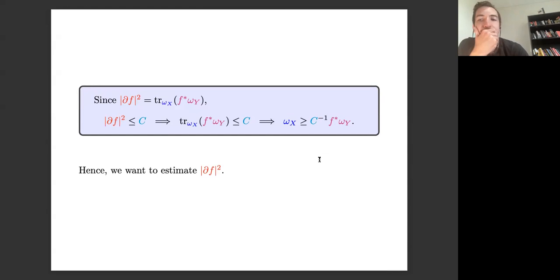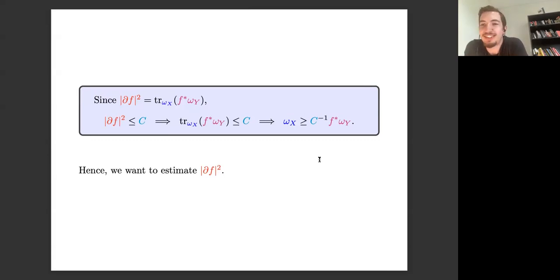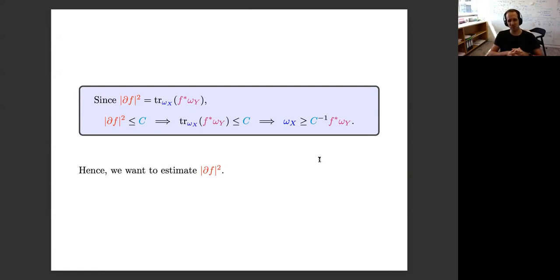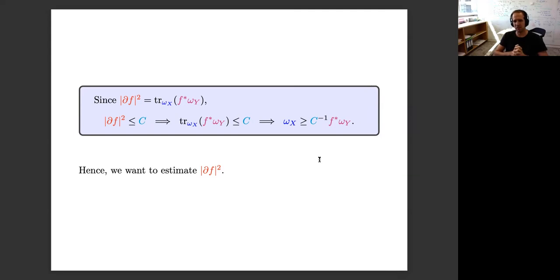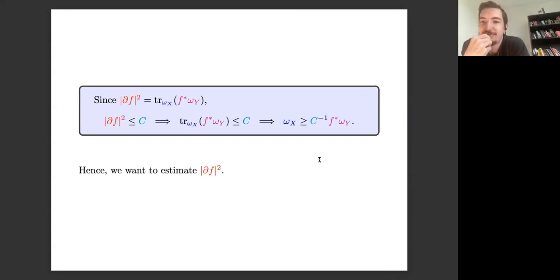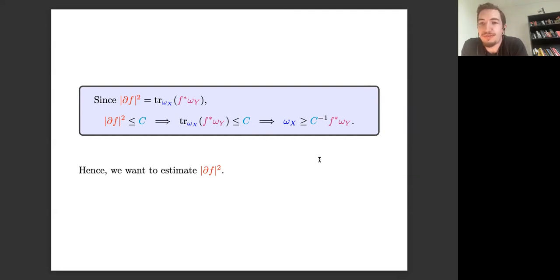People refer to estimates of this type as second order estimates. In Riemannian geometry 'second order' reminds one of curvature, but in Kähler geometry these are called second order, and whether they should still be called that in Hermitian geometry is not entirely clear. The question is also: if you have an ample canonical bundle does that imply you are a projective manifold? Yes — take sufficiently high powers and you will get a projective embedding. So negative holomorphic sectional curvature should only occur on projective manifolds.